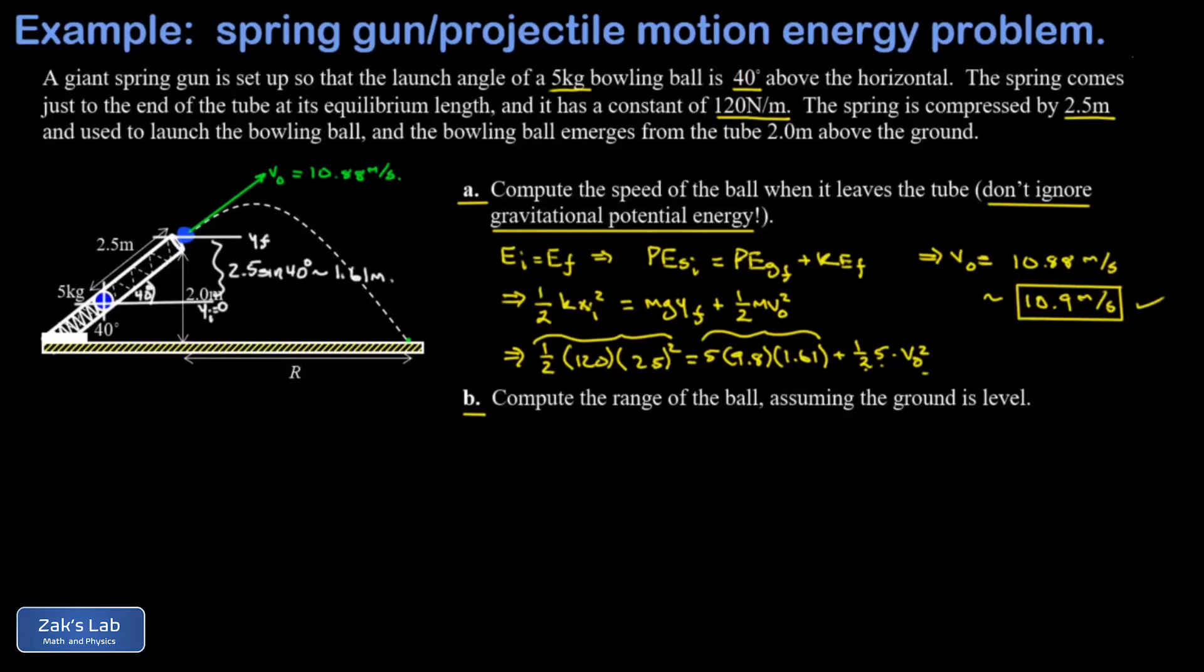The standard approach to this is to decompose that initial velocity vector into components. The horizontal one I'll call v naught x. Just a reminder, this angle here is still 40 degrees. So v naught x is 10.88 cosine of 40, and that's about 8.33 meters per second. Then v naught y is going to be 10.88 sine of 40, and this gives me about 6.99 meters per second.